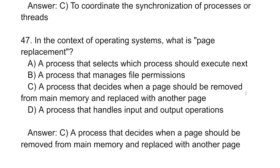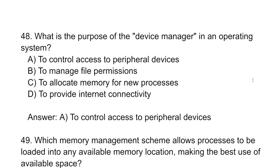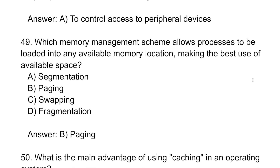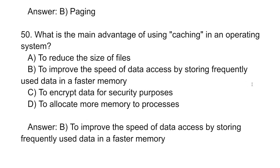In the operating system, what is page replacement? Page replacement is a process that decides when a page should be removed from main memory and replaced with another page. What is the purpose of the device manager? To control access to peripheral devices. Which memory management scheme allows processes to be loaded into any available memory location? That is paging. What is the main advantage of caching in the operating system? To improve the speed of data access by storing frequently used data in faster memory.